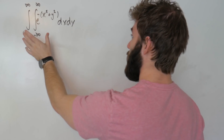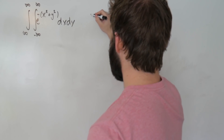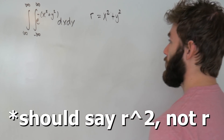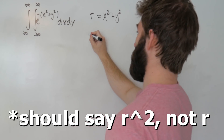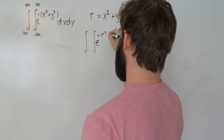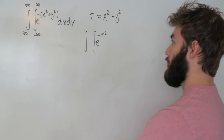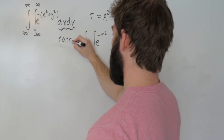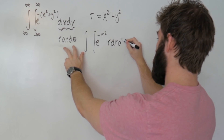This is where things should start to look familiar. We're going to transform into polar coordinates, remembering that r squared equals x squared plus y squared. Making this substitution, we have something in terms of e to the minus r squared. And crucially, when we convert to polar coordinates the measure changes: dx dy becomes r dr dθ. So our integrand becomes e to the minus r squared times r dr dθ.